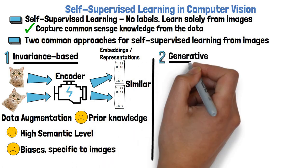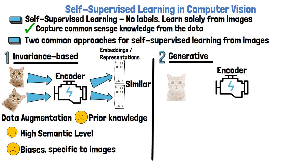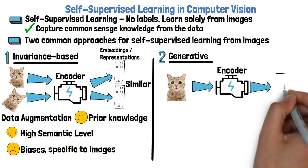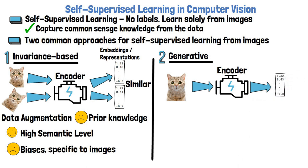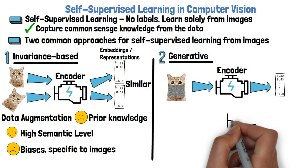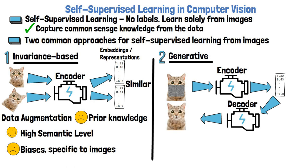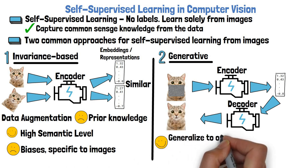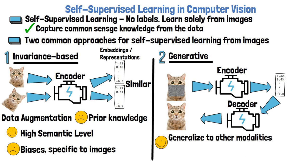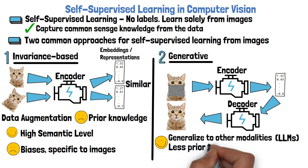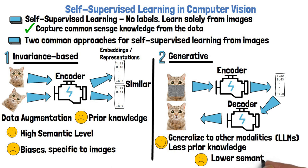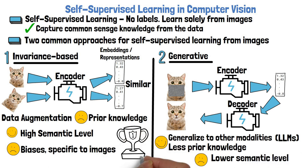The second approach is generative. Here we also want an encoder that can take an image and generate meaningful embeddings. To train it, during training we mask or corrupt random parts of the input image, then use another model to reconstruct the image from the encoder's embeddings. This approach generalizes well to other data types — for example, large language models are pre-trained to predict the next word or masked words. Less prior knowledge is needed, but this approach usually reaches lower semantic levels and underperforms compared to the invariance-based approach.